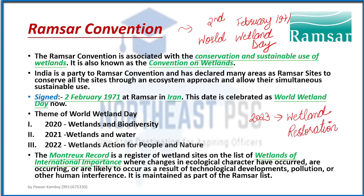To keep a record of all Ramsar Convention sites, there is a record called the Montreux Record, in which wetlands of international importance where some ecological character change has occurred, or is occurring — due to pollution, technological development, or human interference — are maintained as part of the Ramsar list so that they can be monitored and properly managed.